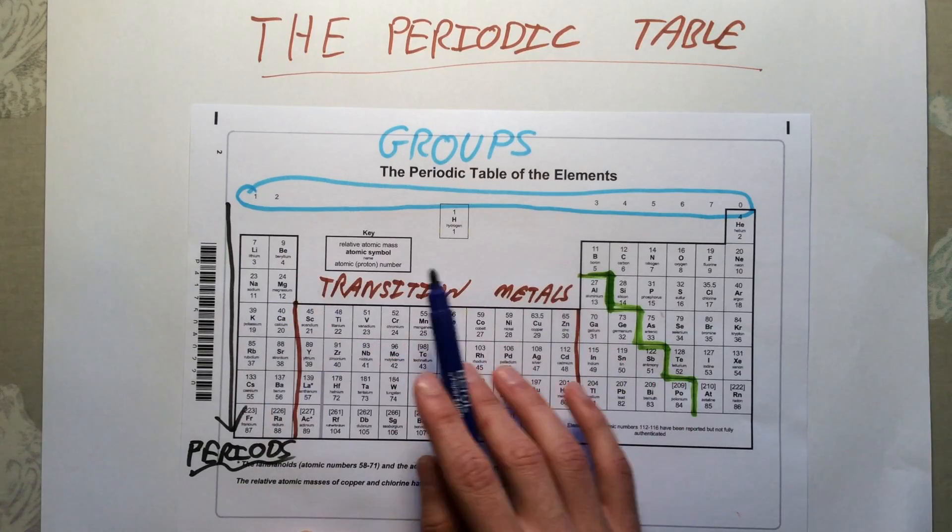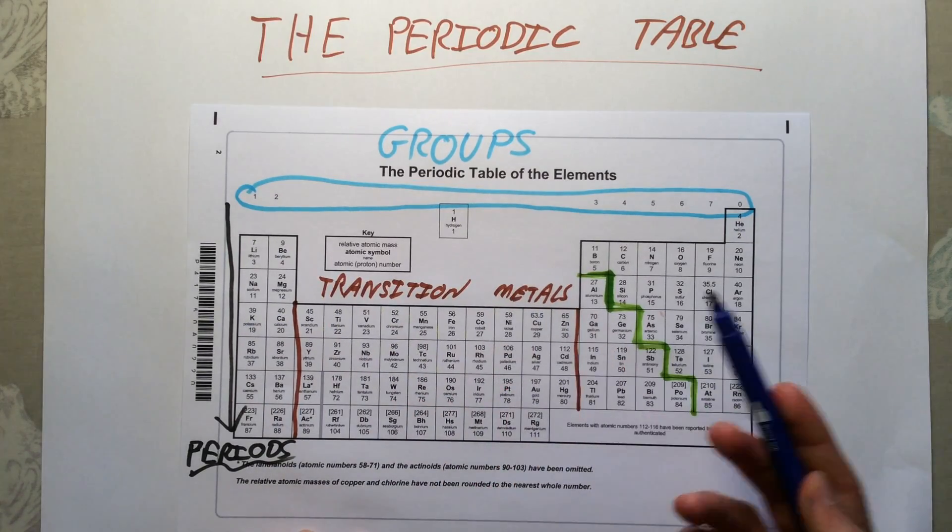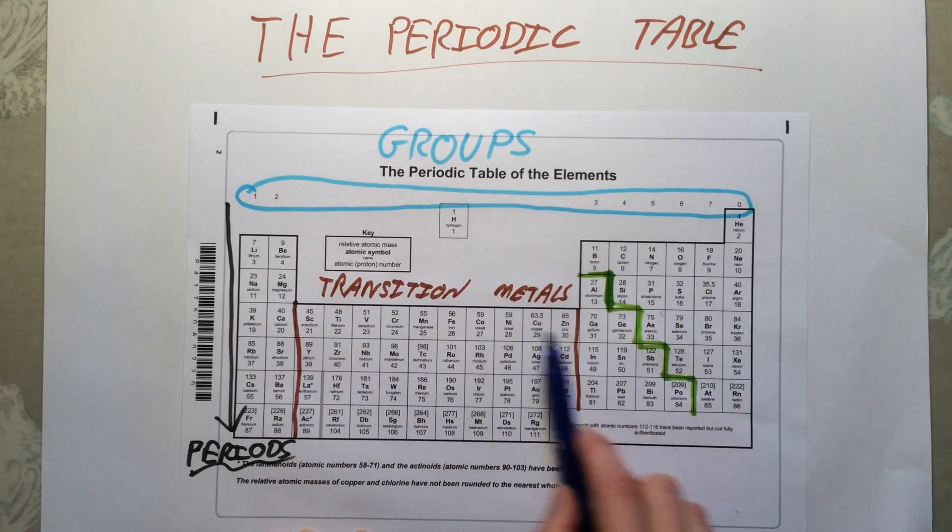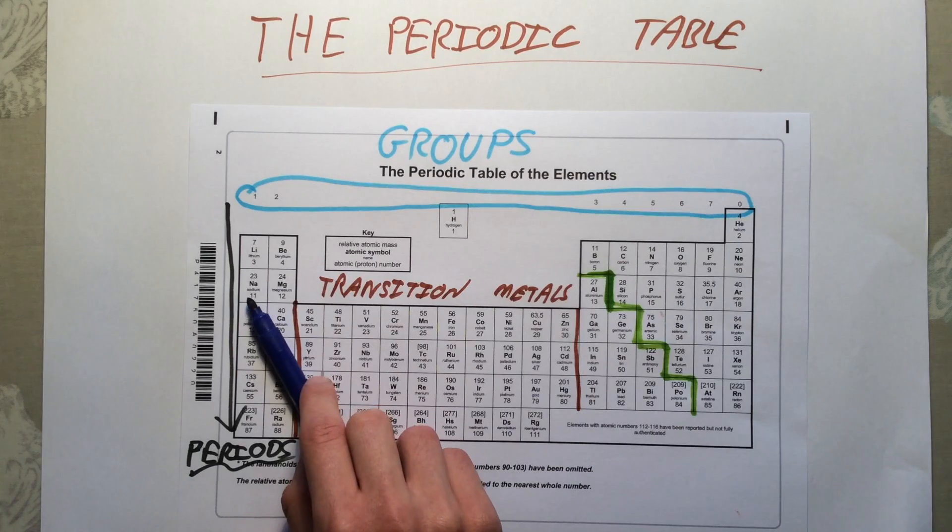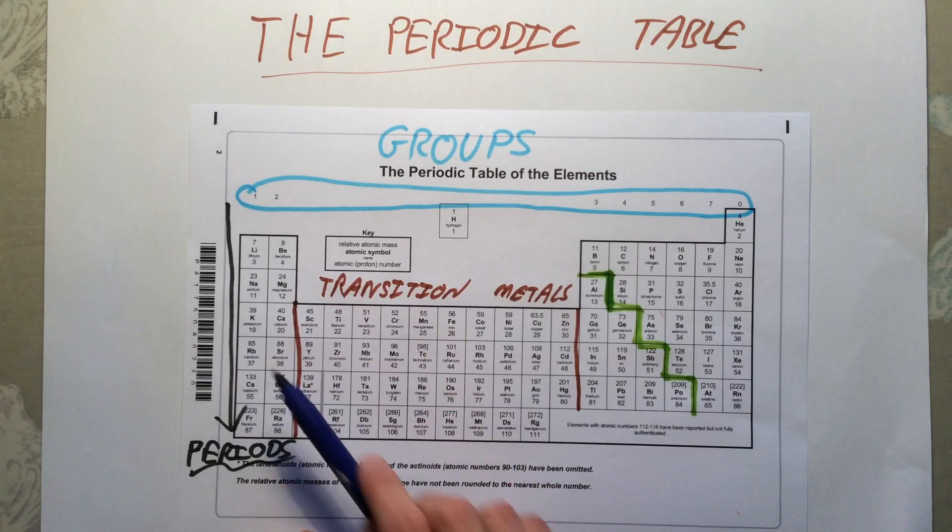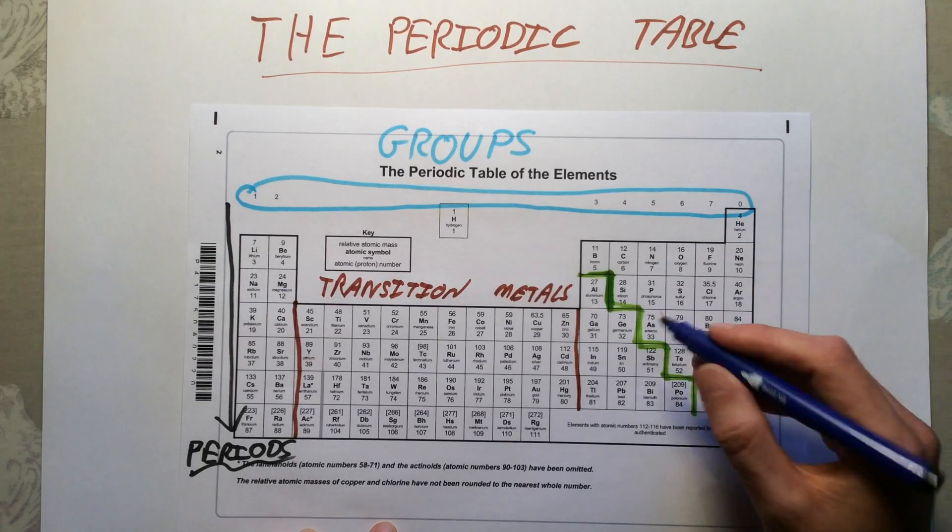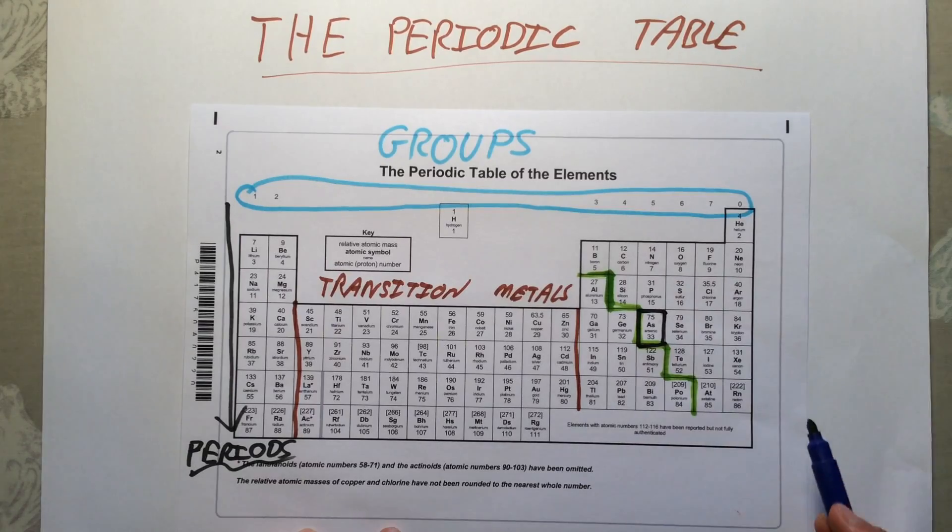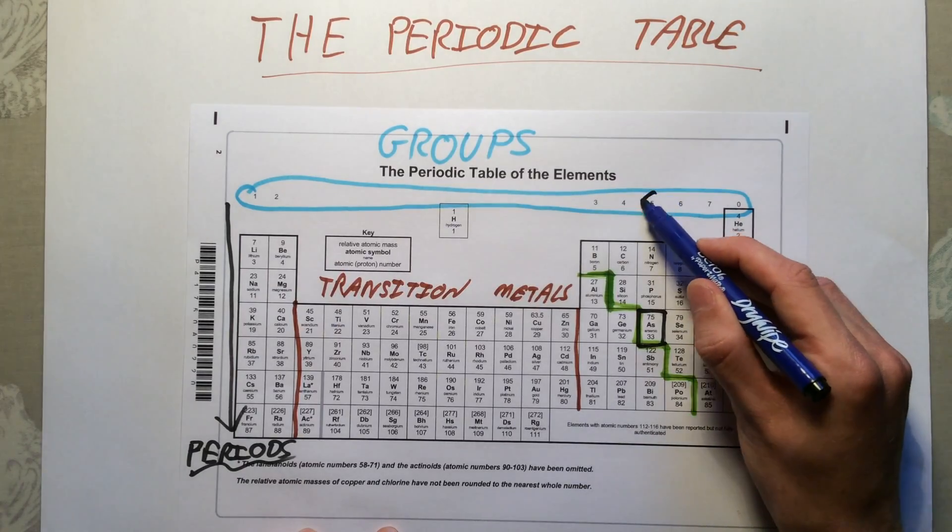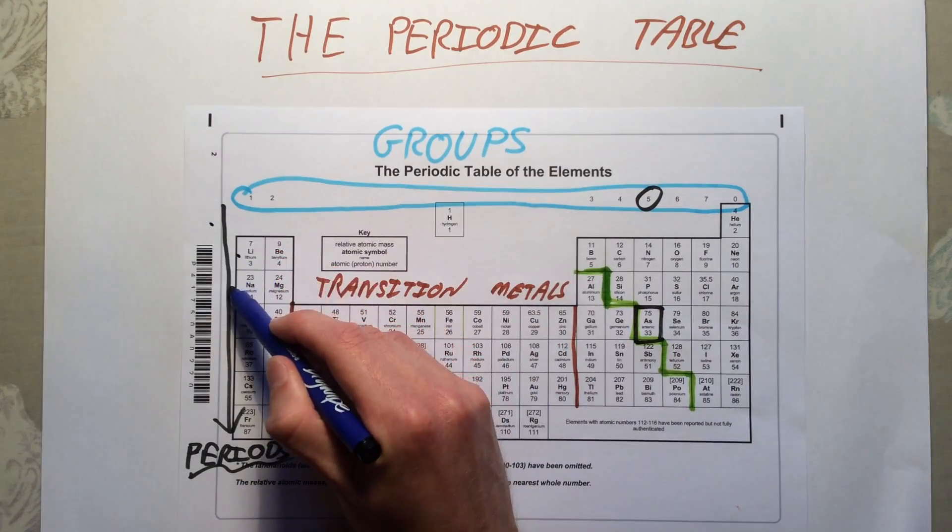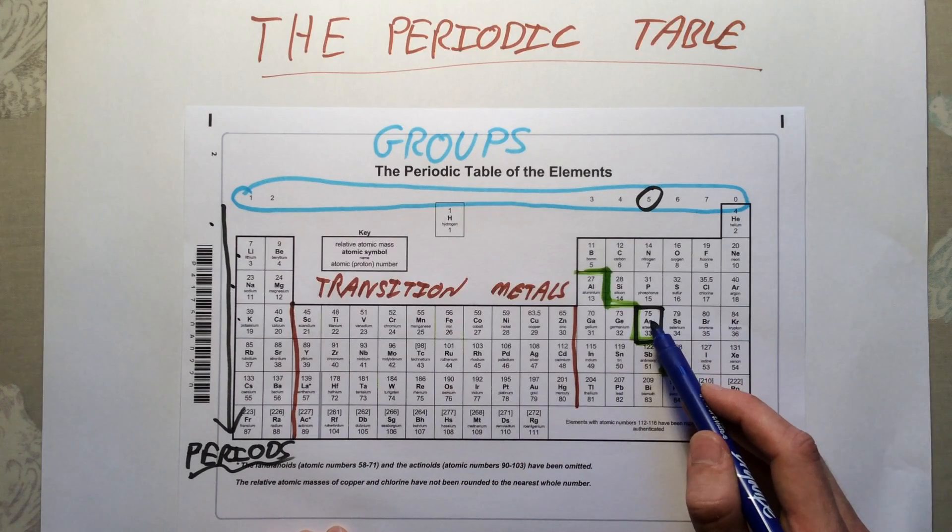The reason they're called periods is that the properties of these elements repeat every time you go to a new period. Similar to what we said before, if we have lithium and we go along this entire period, when we get back to the start of the next period the properties repeat, so sodium again will have similar properties or we predict would have similar properties to lithium. Let's just pick one example, let's just pick a random one, arsenic. You might be asked what group and period it's in. You simply need to find the group on the top, that is in group five. You then need to count down along the sides: one, two, three, four. So arsenic is in group five, period four.